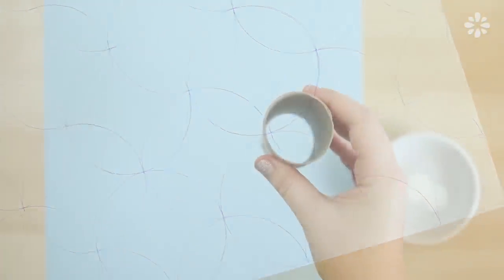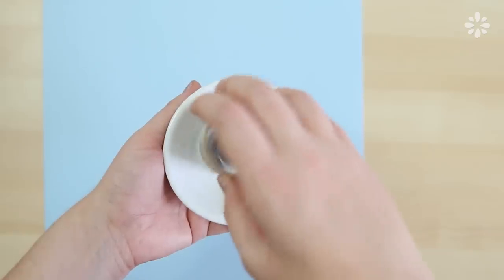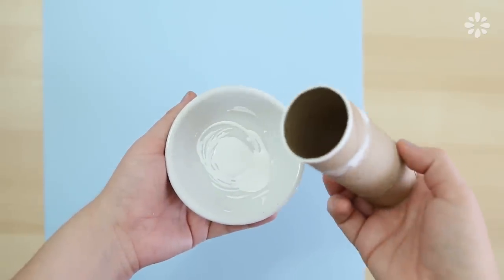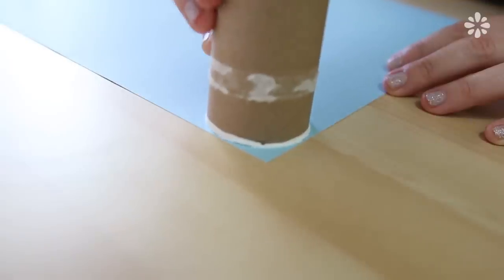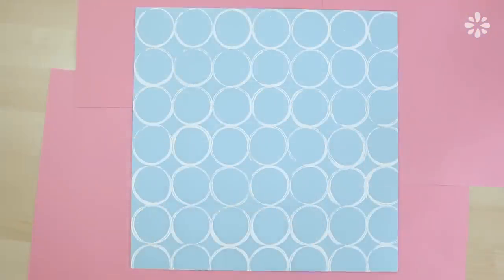Another way to make the pattern is to stamp with something round, and in this case I'm using a toilet paper roll. Dab the end in some paint and do the same method that you just learned, making rows and rows of circles right next to each other, all aligned.